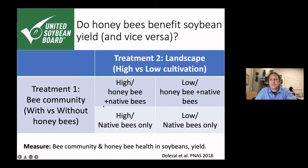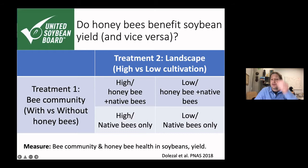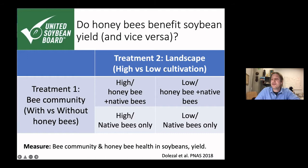We set up an experimental design to ask whether honeybees benefit from soybeans and whether soybeans benefit from honeybees. We had two treatment categories: soybean fields with honeybees placed nearby versus fields with no honeybees — where there were no beekeepers within a three-mile radius, so any bees present were just native bees. We also looked at landscape context: high cultivation (fields surrounded by 80 percent or more corn and soybeans) versus low cultivation (less than 50 percent corn and soybeans), meaning more diversity in the landscape — pasture, some prairie, urban environment, or riparian areas.